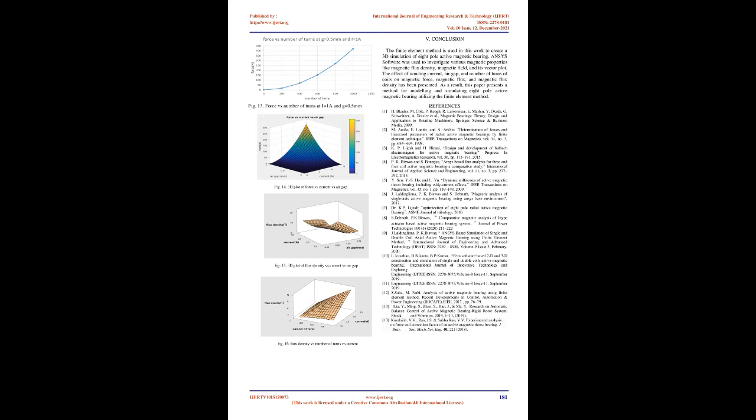Figure 16 shows a 3D plot of flux density, current, and number of turns. It is seen that the flux density increases with the increase of both number of turns and current. That is because as the number of turns increases, the magnetic force increases and thus the magnetic flux density increases when the current is constant. And when the current increases with the number of turns constant, the magnetic force increases and the flux density increases too.